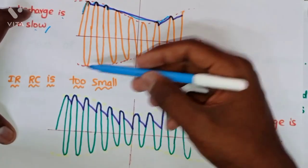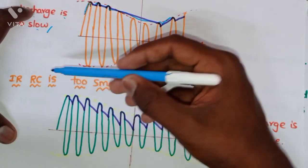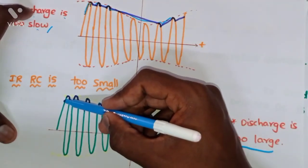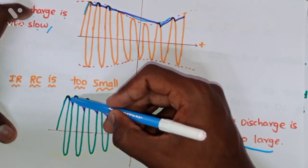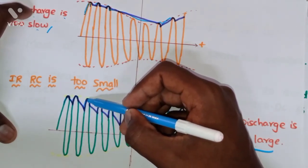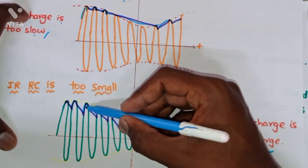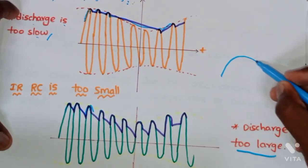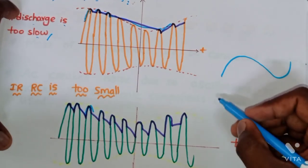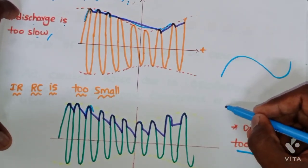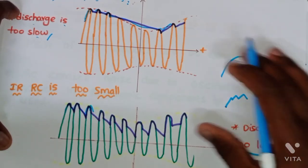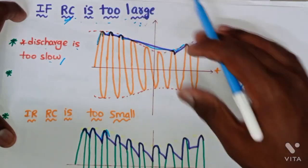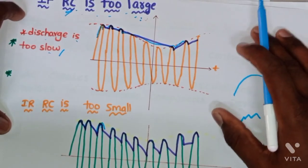If RC is too small, then the discharge is very fast — observe here: it rises sharply to the positive peak and falls down sharply. So if RC is too large we get a smooth curve shape, and if RC is too small the output is not a smooth curve — it rises and falls sharply. The demodulated output completely depends upon the low-pass filter RC components. This is about the envelope detector — I hope you understand. Thank you for watching.